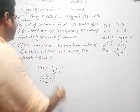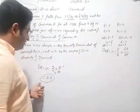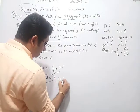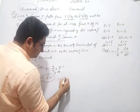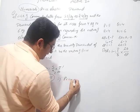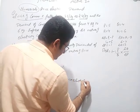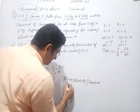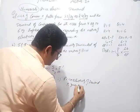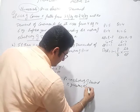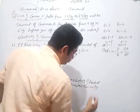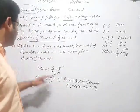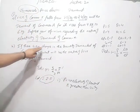Based on this we need to express our opinion regarding the nature of elasticity of demand. When ED is equal to 2.5, we will comment that price elasticity of demand is greater than unity, that is greater than 1. Now comes the next question.